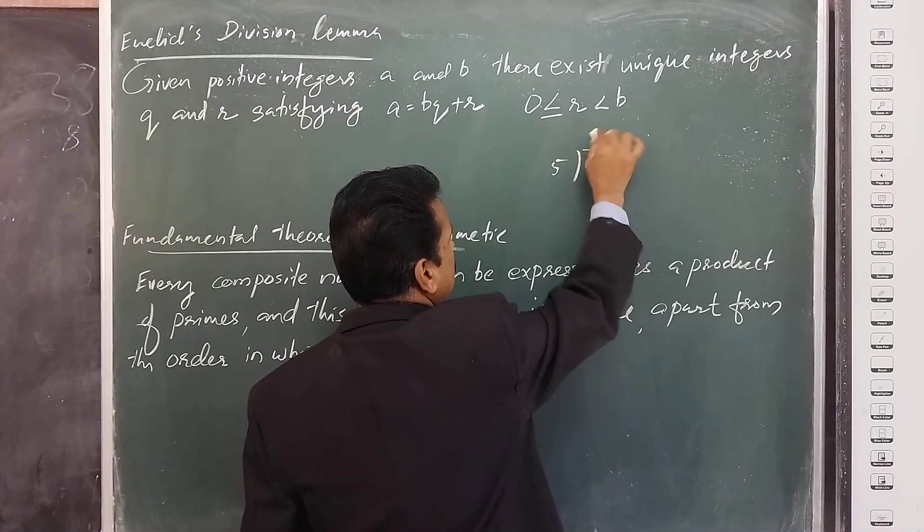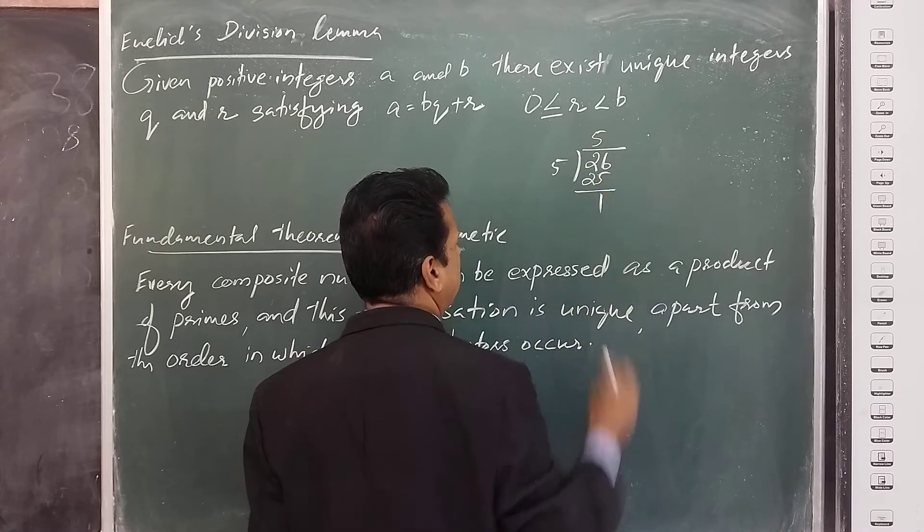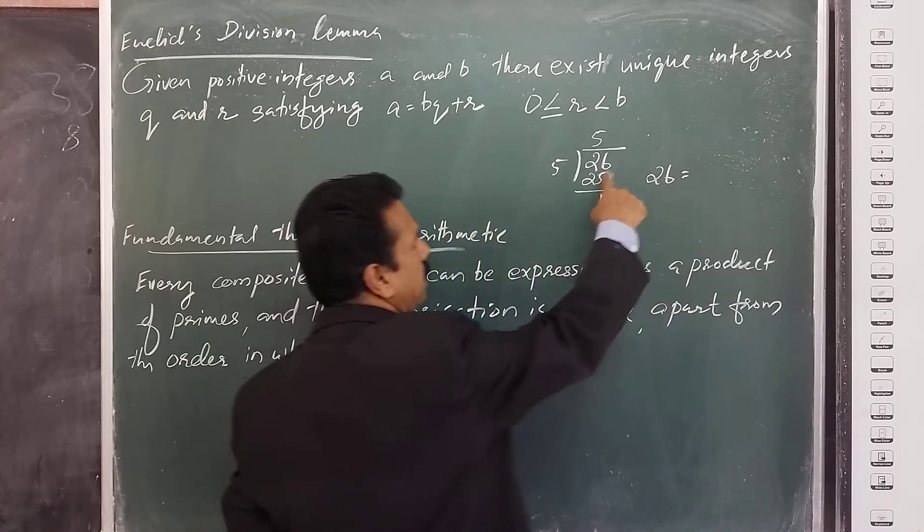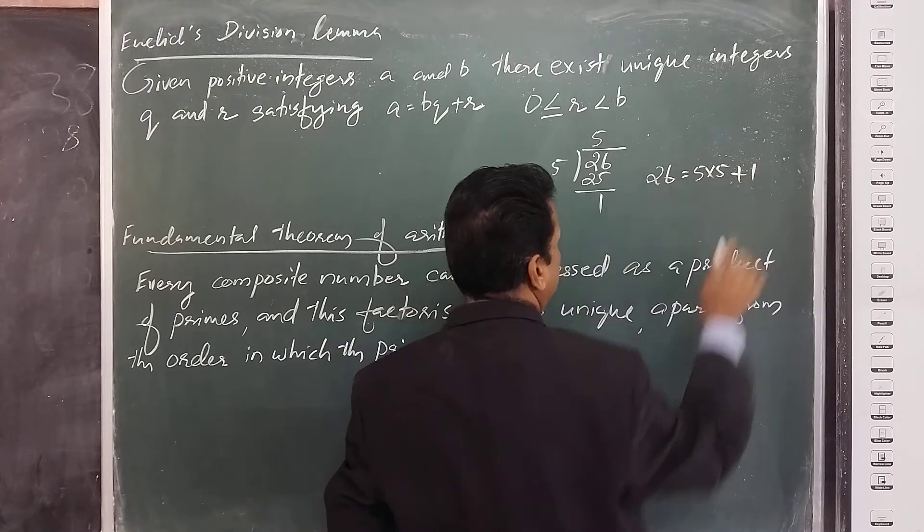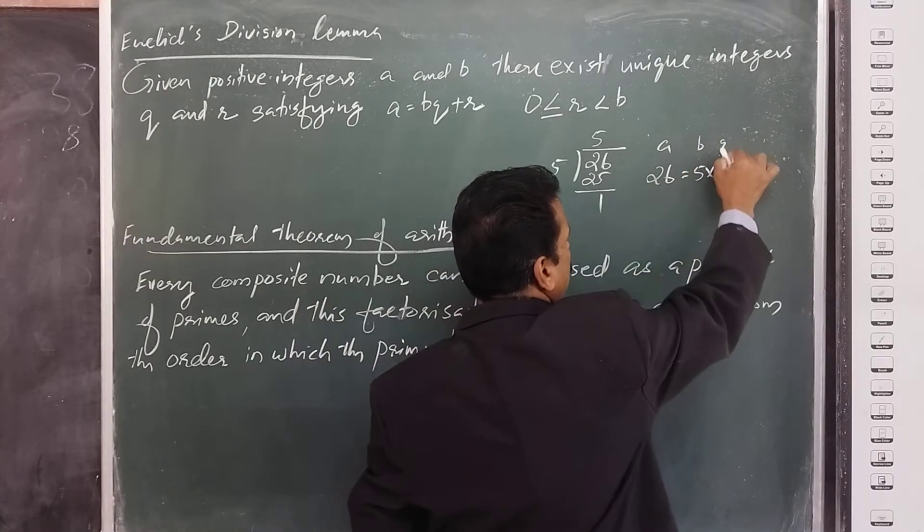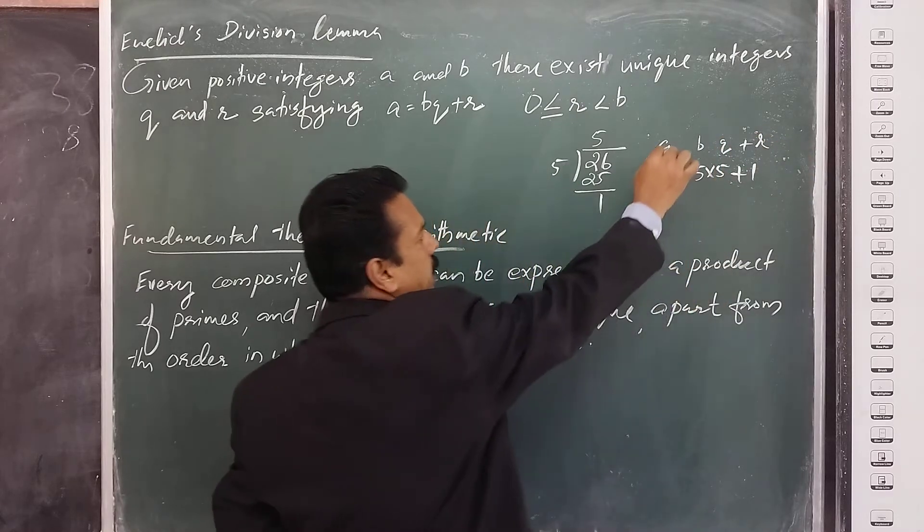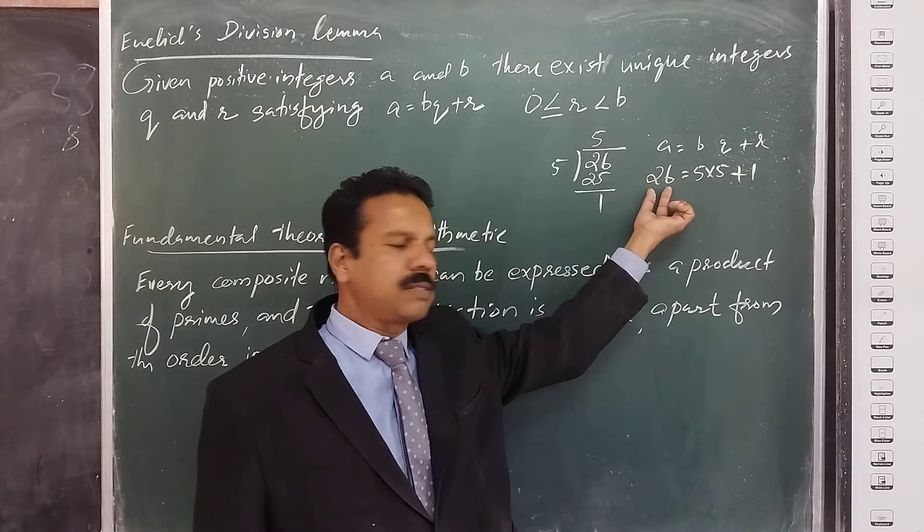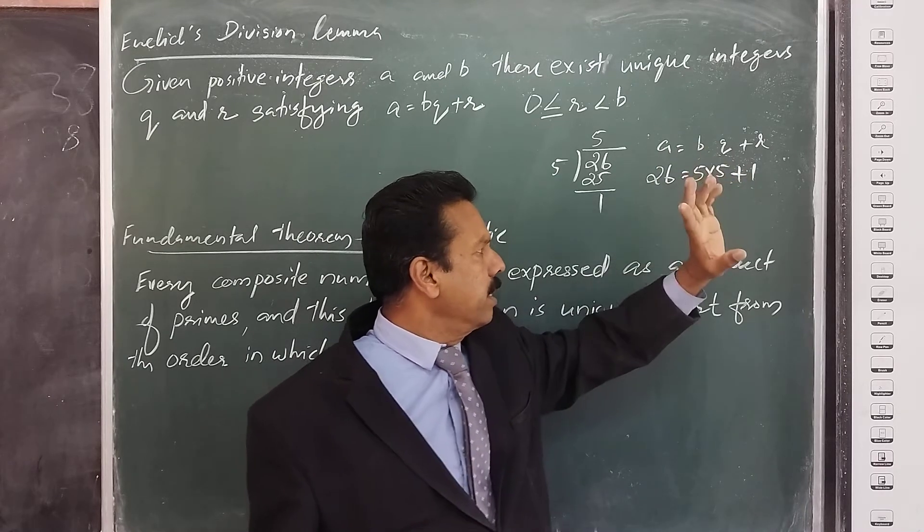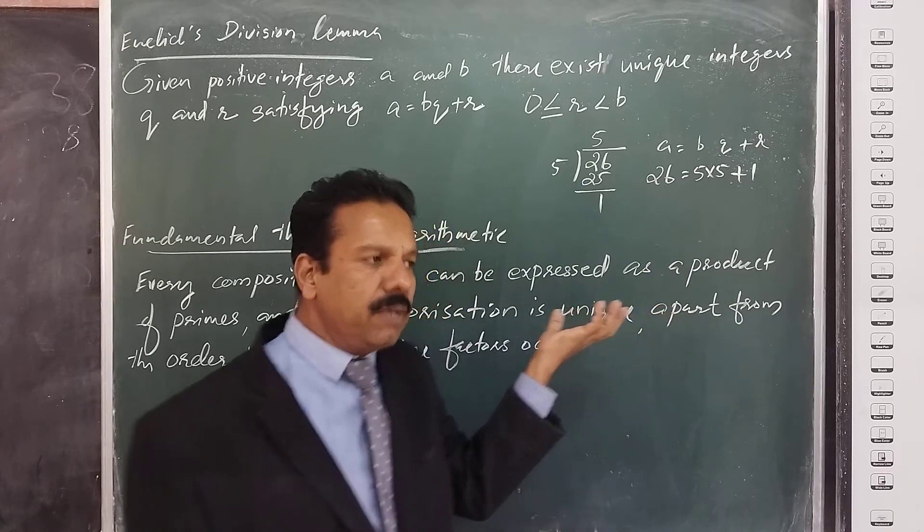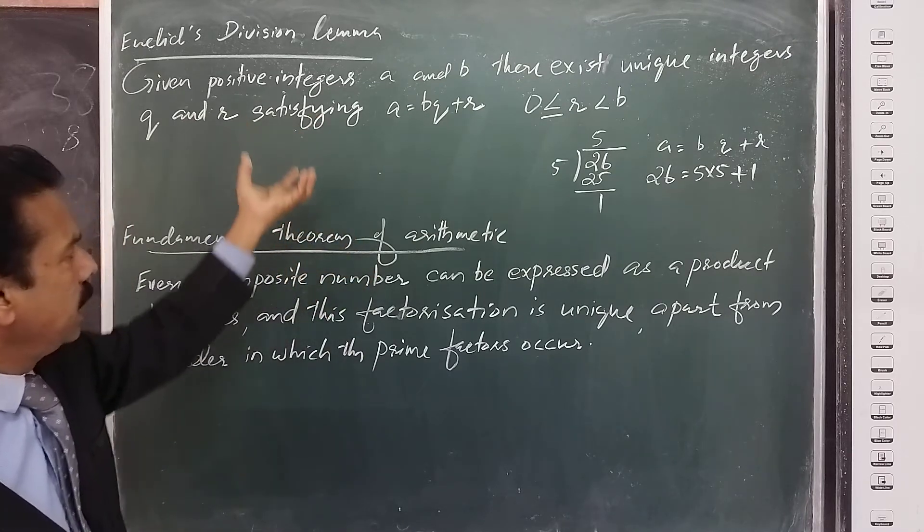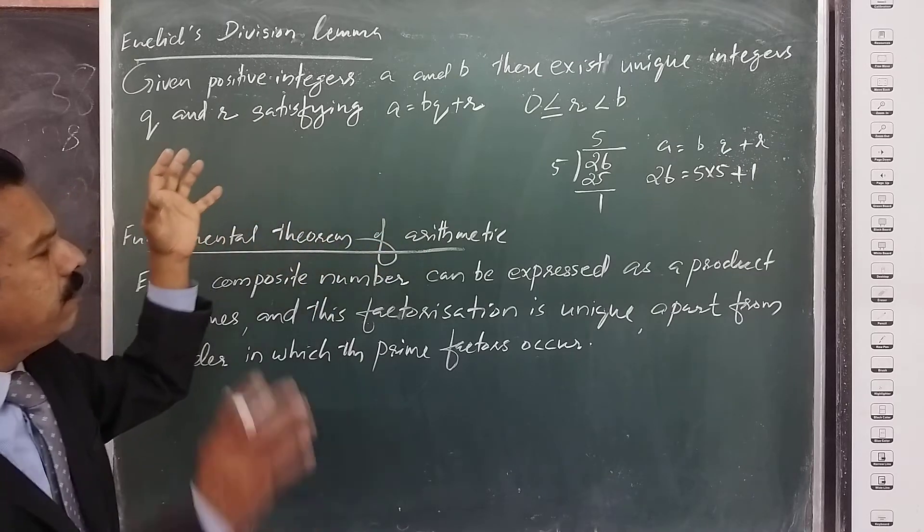Euclid's Division Lemma: From global classes you have studied different divisions. Suppose 26 divided by 5. The number 26 you can write as 5 into 5 plus 1. That is, let 26 be A and this is B and Q plus R. Here the positive integer is 26, and we can write this number as divisor into quotient plus remainder. This is a very simple division process.